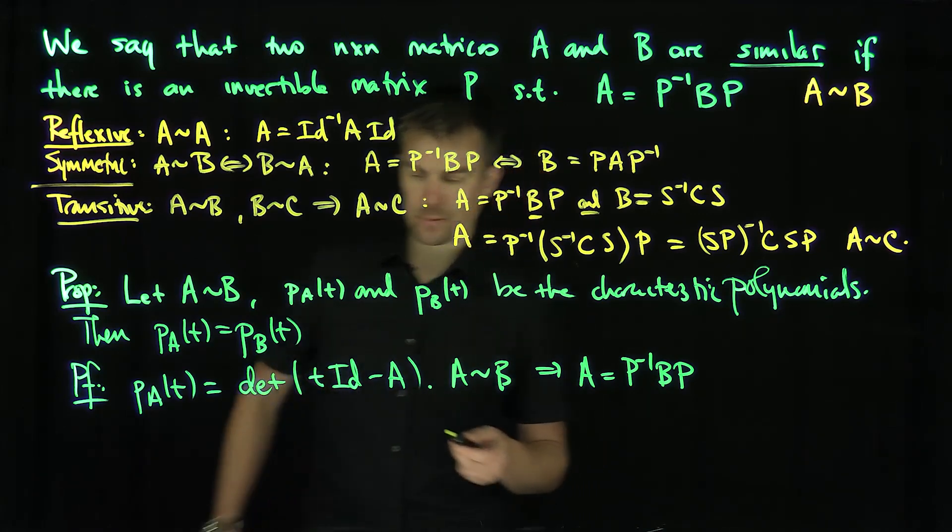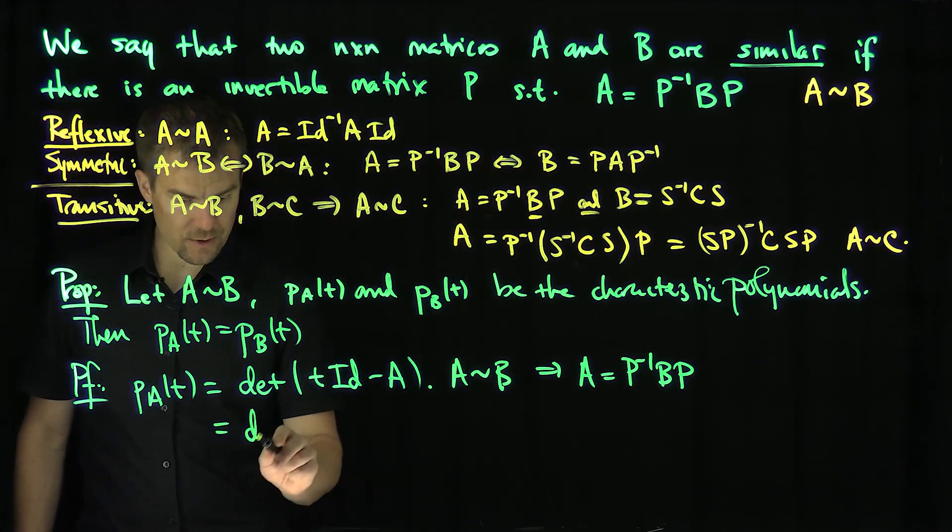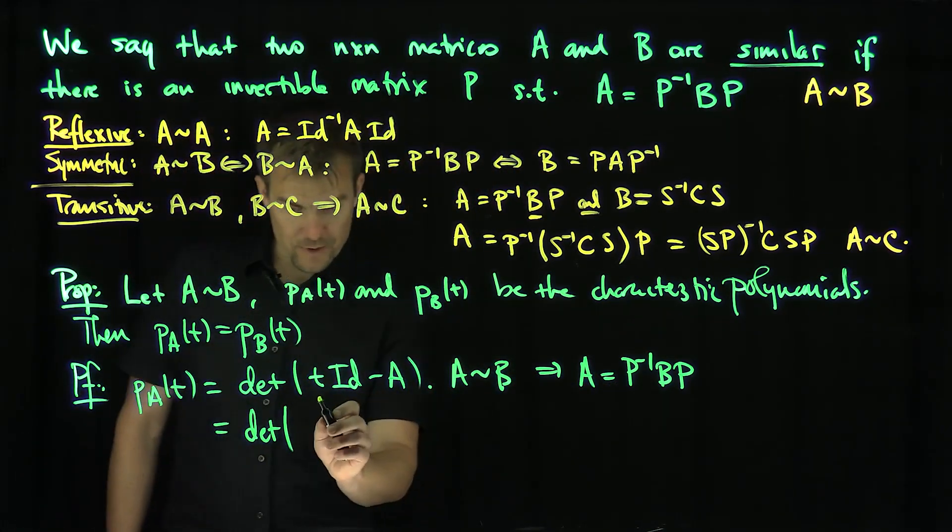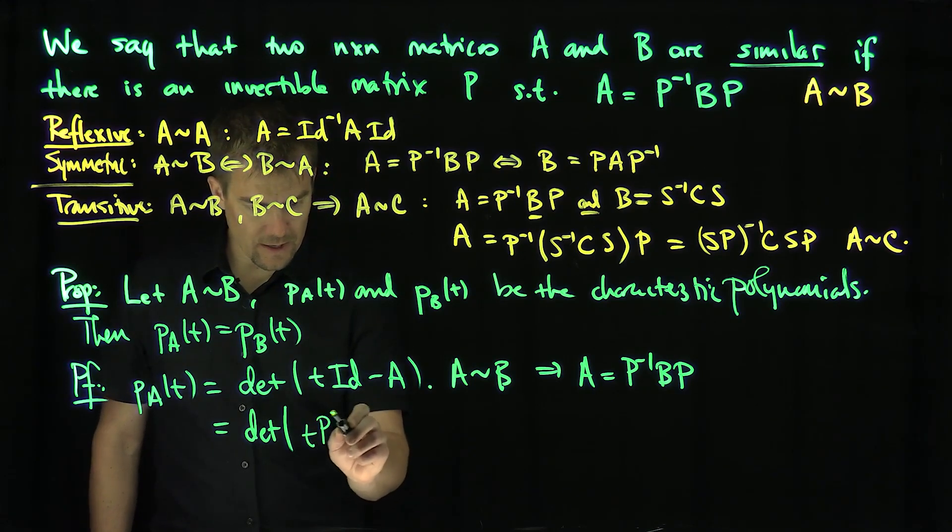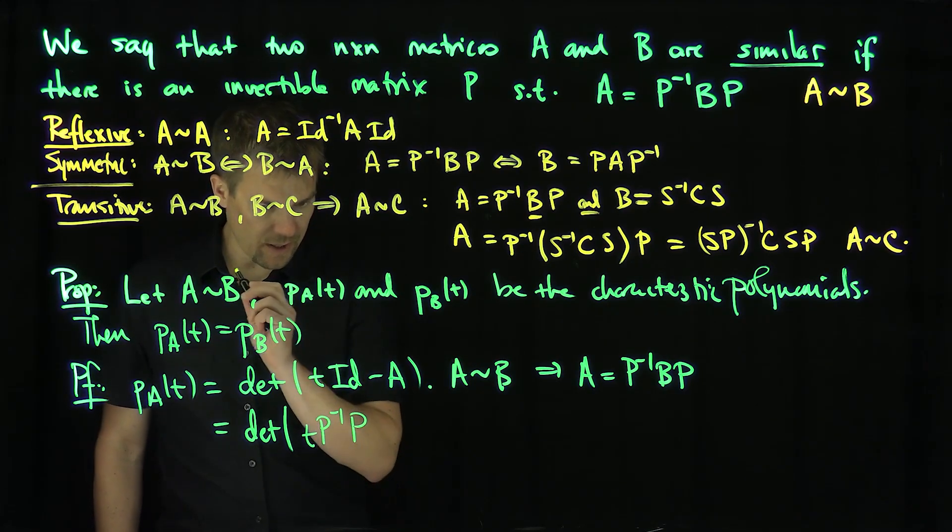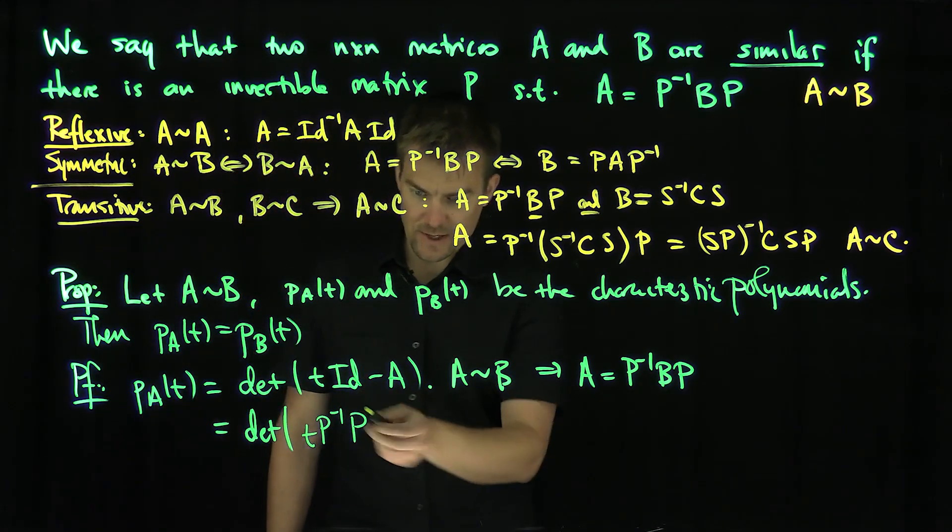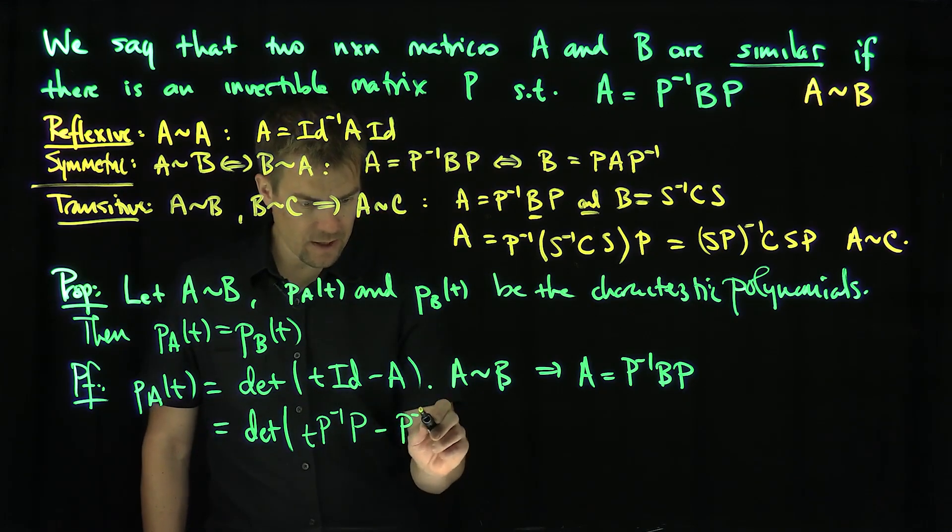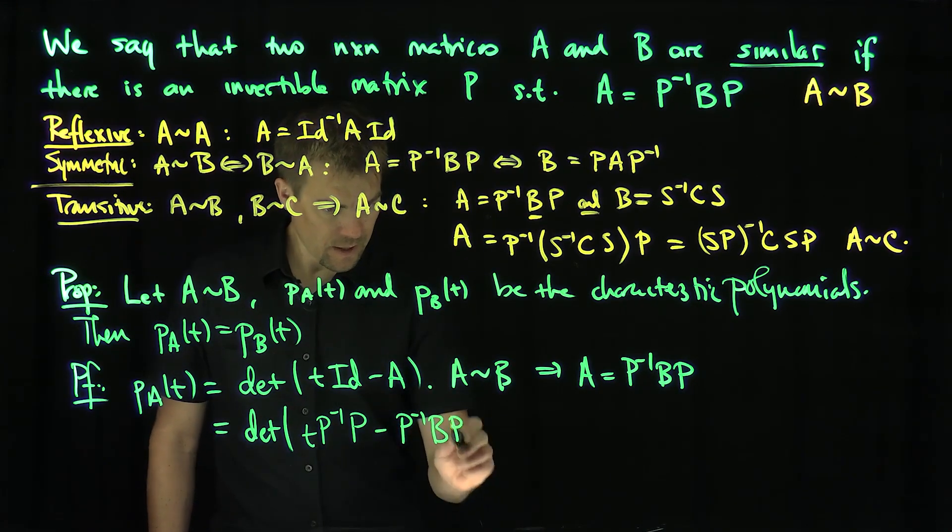So I'm going to feed that into this expression. So now I can write this as the determinant of, I'm going to write the identity as just P inverse P, because P P inverse is the identity, minus P inverse B P.